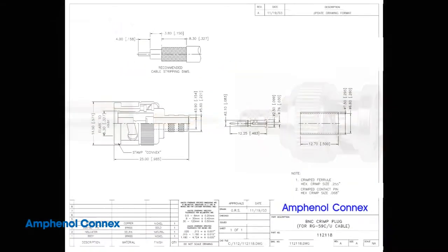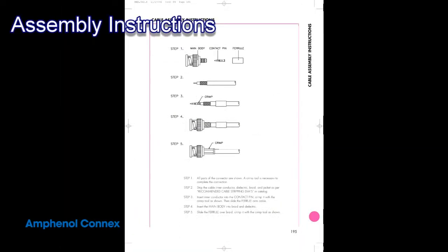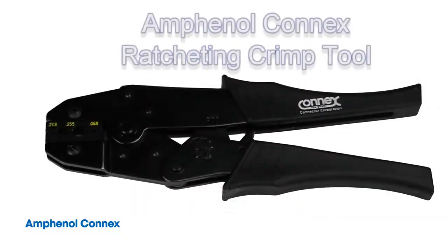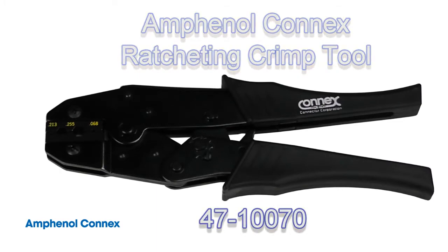You will also need the customer drawing corresponding to your part number, 3-piece crimp assembly instructions, and the Amphenol Connects ratcheting crimp tool that corresponds with the type of cable your connector mates to. In this case, part number 4710070.